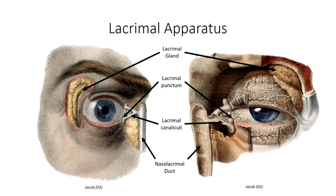Tear production is typically imperceptible but an ongoing process. Too little tear production will result in dry and irritated eyes. Of course, there can also be overproduction of lacrimal fluid, as seen when the eye is irritated or a person is overcome with emotion. At these times, there is too much volume to flow normally into the punctum, and the overflow streams down the face as tears. Drainage into the nasal cavity also increases, which is why crying results in the person experiencing a runny nose.